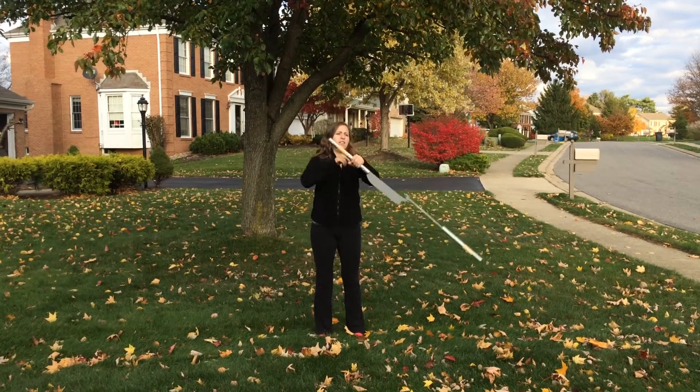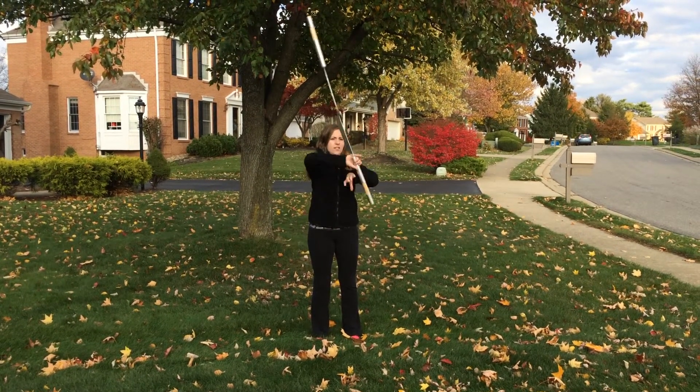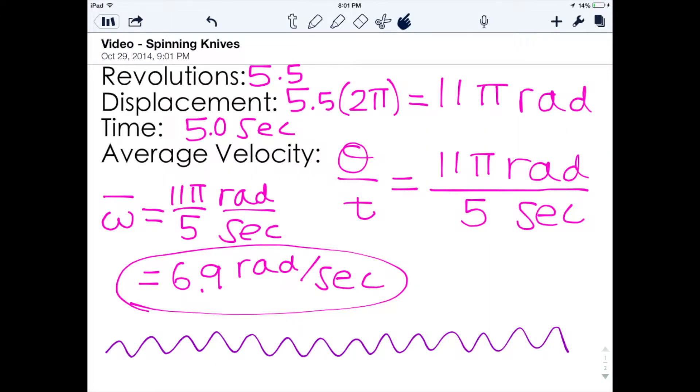We're going to begin with a video of me twirling the knives. The knives make a total of five and a half revolutions in five seconds. Leading us to the first slide, we can see our constants: revolutions and time.